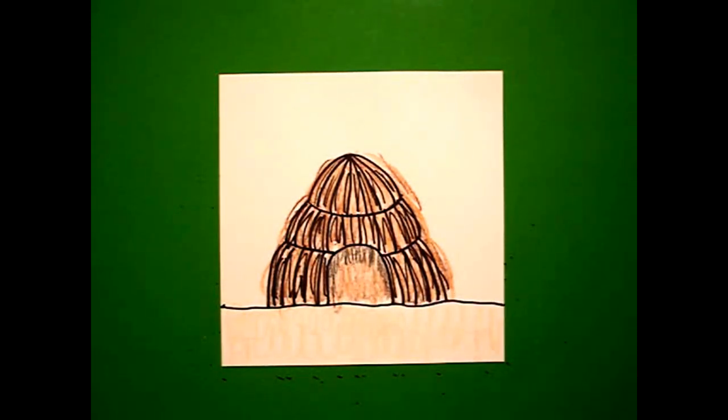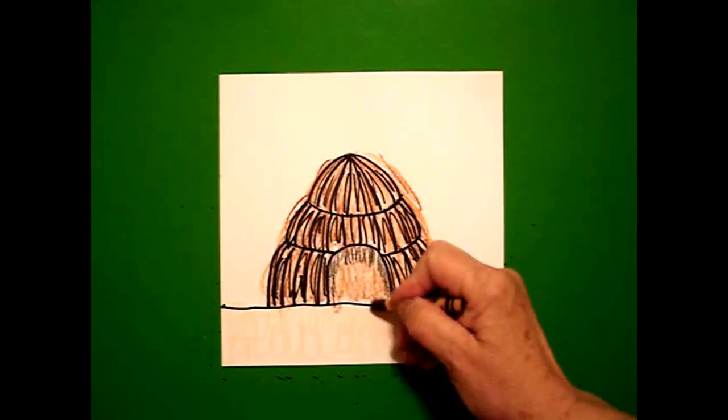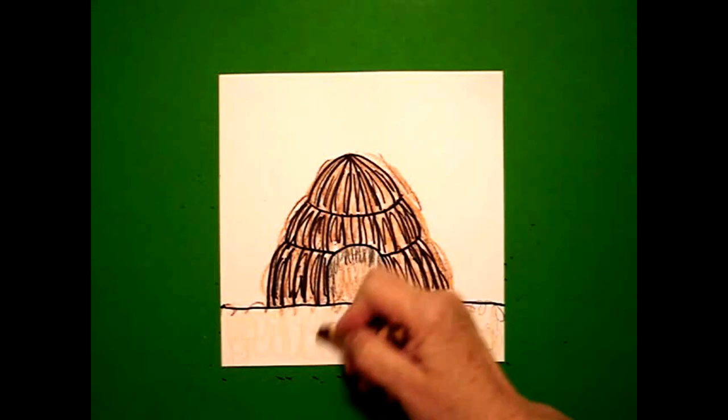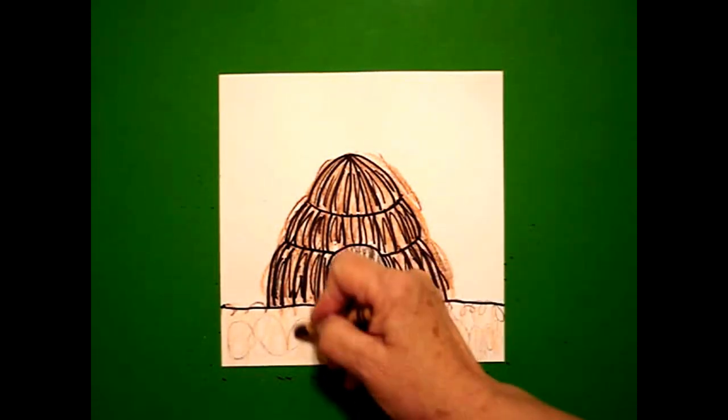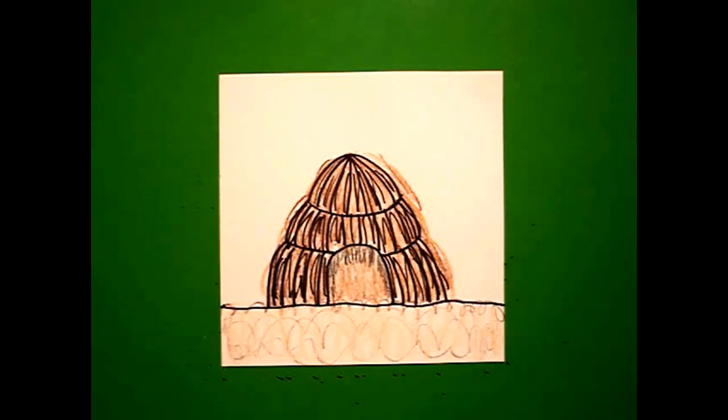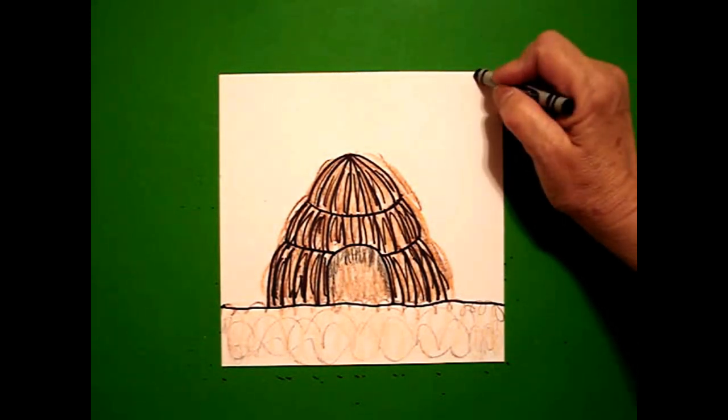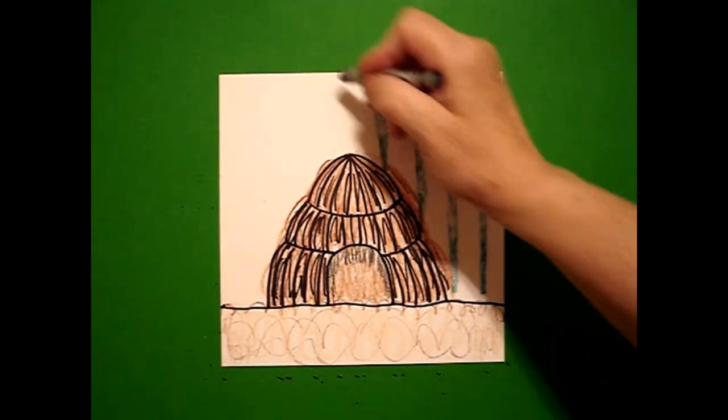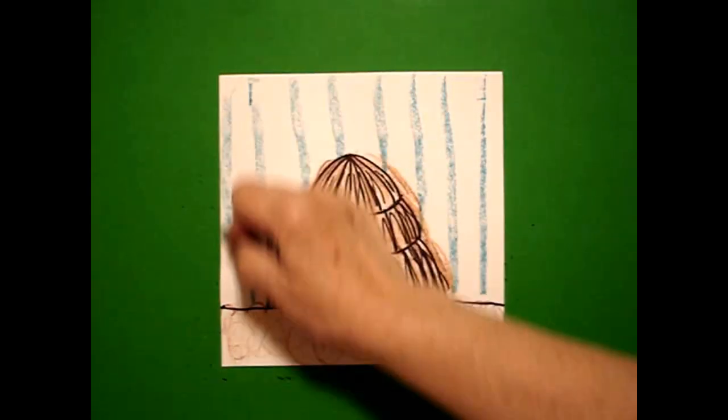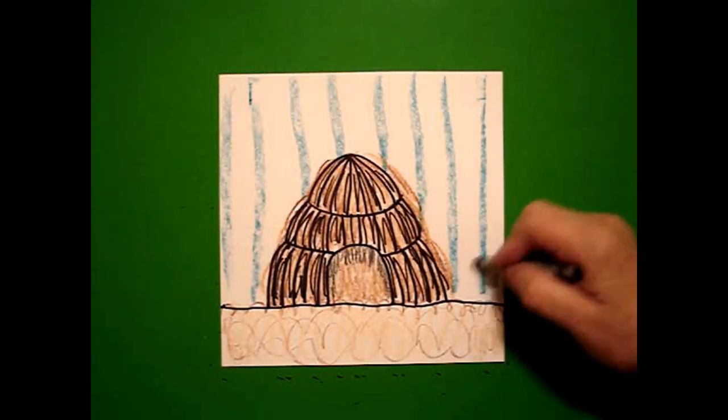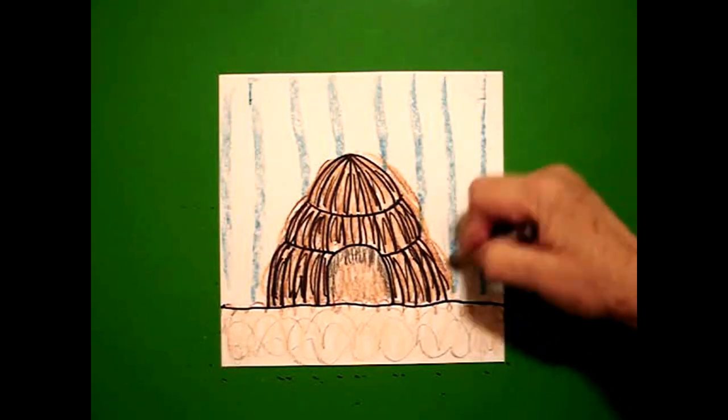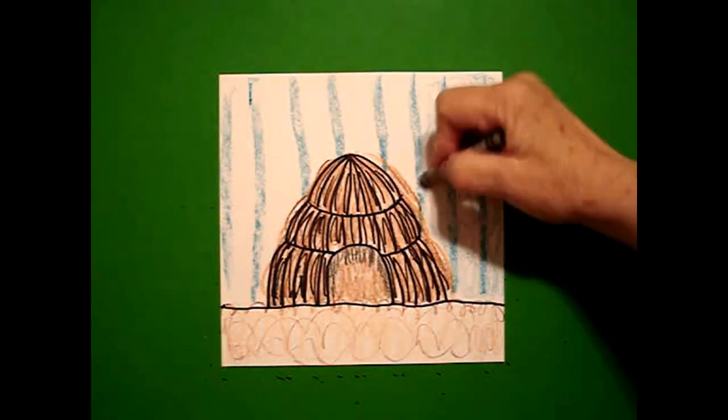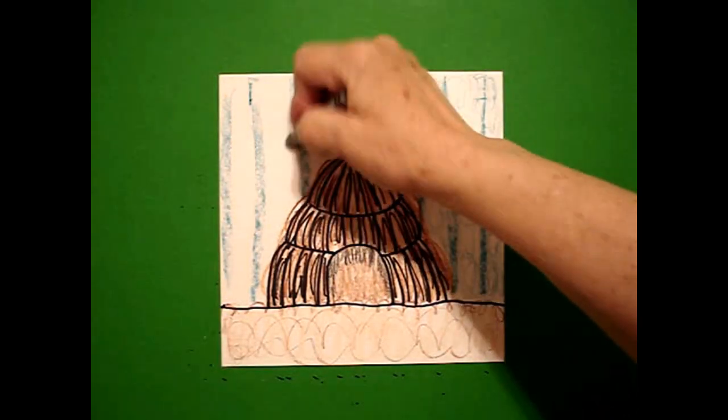And in the back I'm going to take my blue green and I'm going to draw some lines all the way across and then with the same color blue I'm going to color over the lines. This is just because I want to give the background a little bit more of a textured look than just sky and a sun.